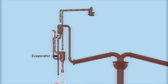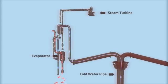The process starts when warm surface water is used to boil a fluid, producing steam. The steam turns a turbine, generating electricity. Cold water from the ocean's depths condenses the steam back into liquid, completing the cycle.